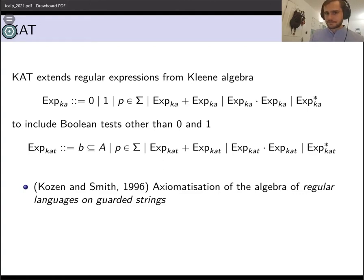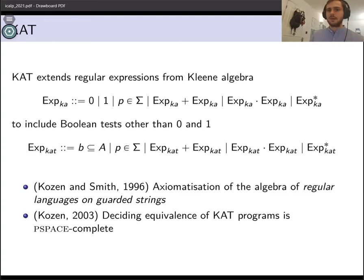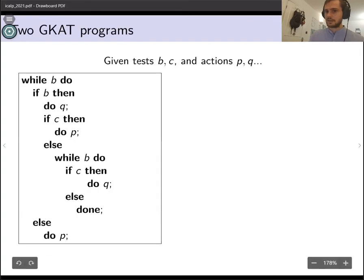Unfortunately, KAT is quite expressive — you can write down lots of different programs in KAT — and so deciding equivalence actually ends up being PSPACE-complete in general. So it's a bit of a hassle to decide when two KAT programs are equivalent. The language we'll be talking about is a fragment of KAT, a really nice fragment where deciding equivalence is actually quite a bit easier.